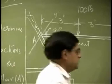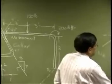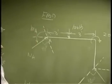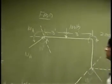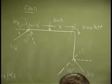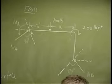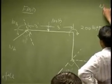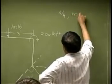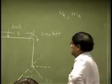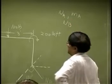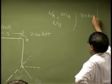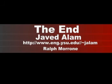Since there is no rotation allowed at A, you add another reaction — an unknown moment M sub A. So those two are the reactions at point A: the force N sub A going perpendicular, and the fixed moment M sub A. Then you also have the reaction at B, which is N sub B. So these are all the unknown forces for this problem.